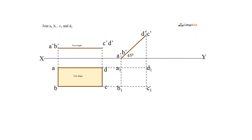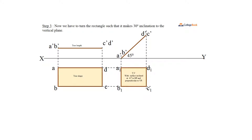Join A1, B1, C1, and D1. A1, B1, C1, and D1 represent the top view with the surface of the rectangle inclined at 45 degrees with the horizontal plane and perpendicular to the vertical plane.